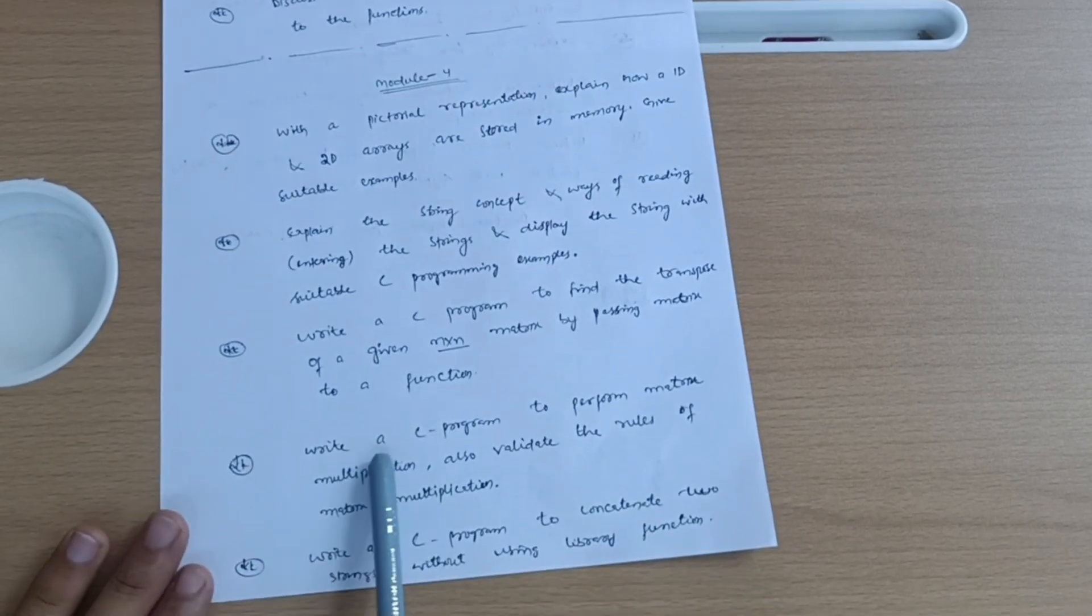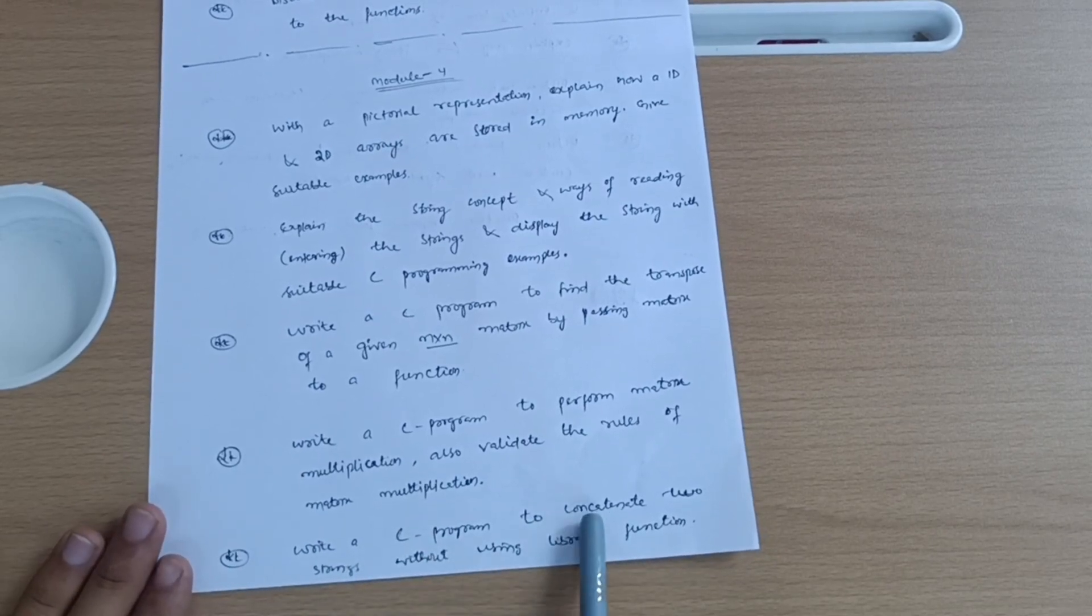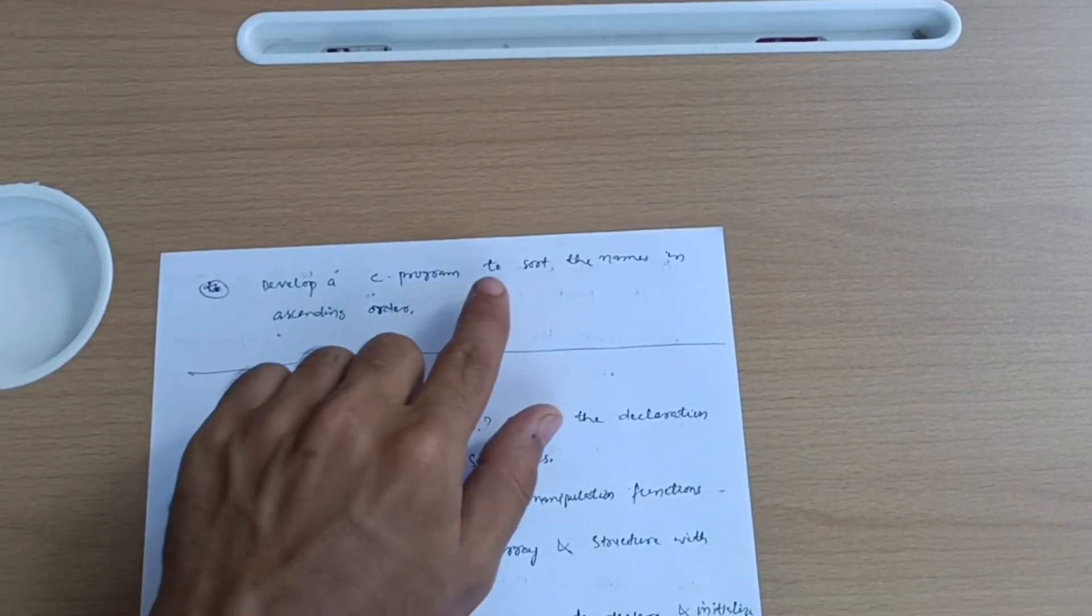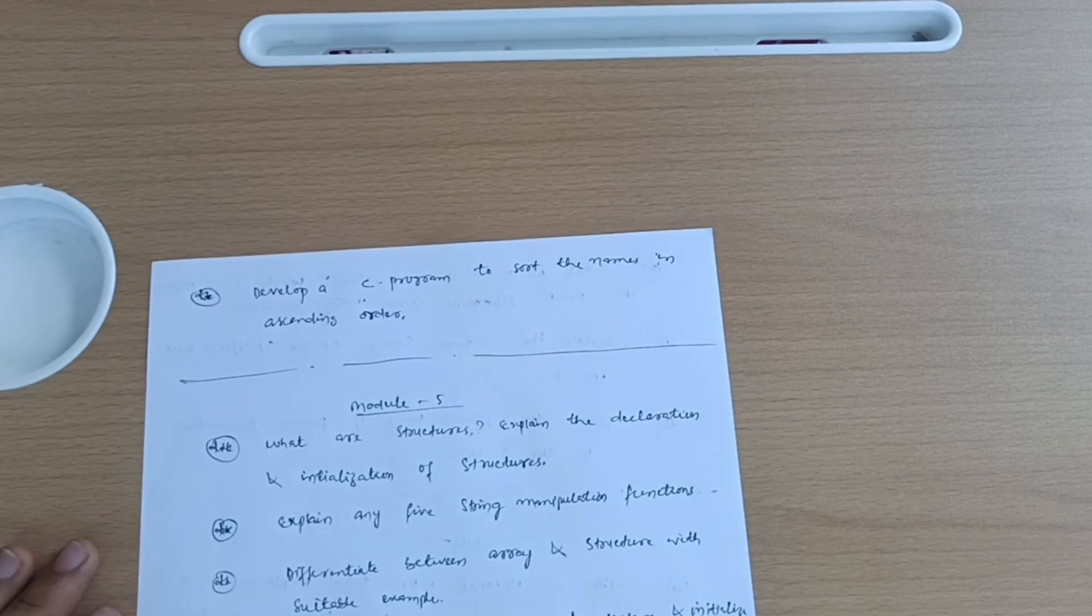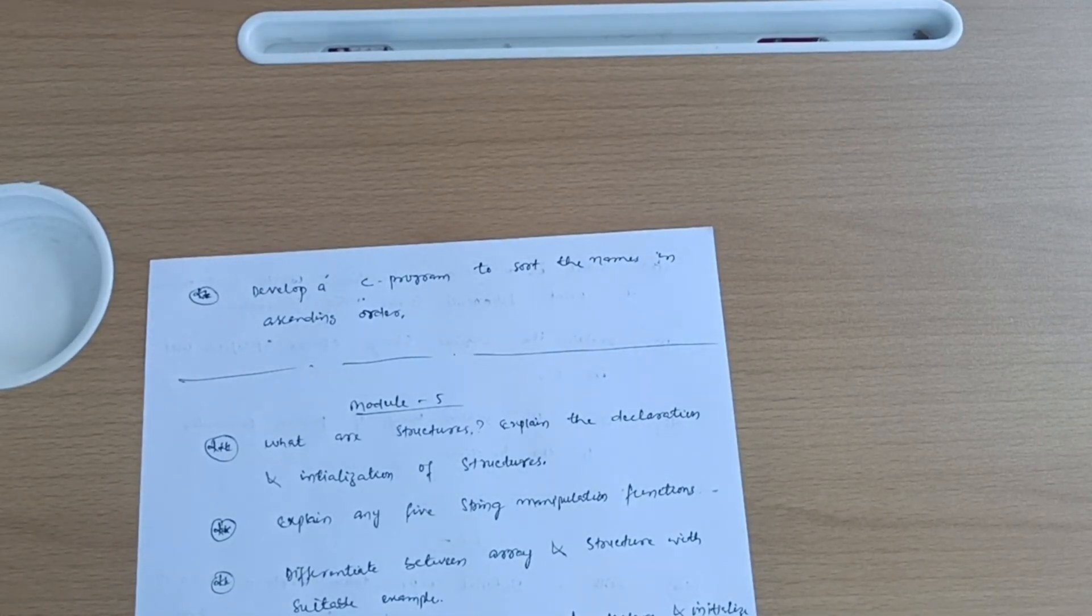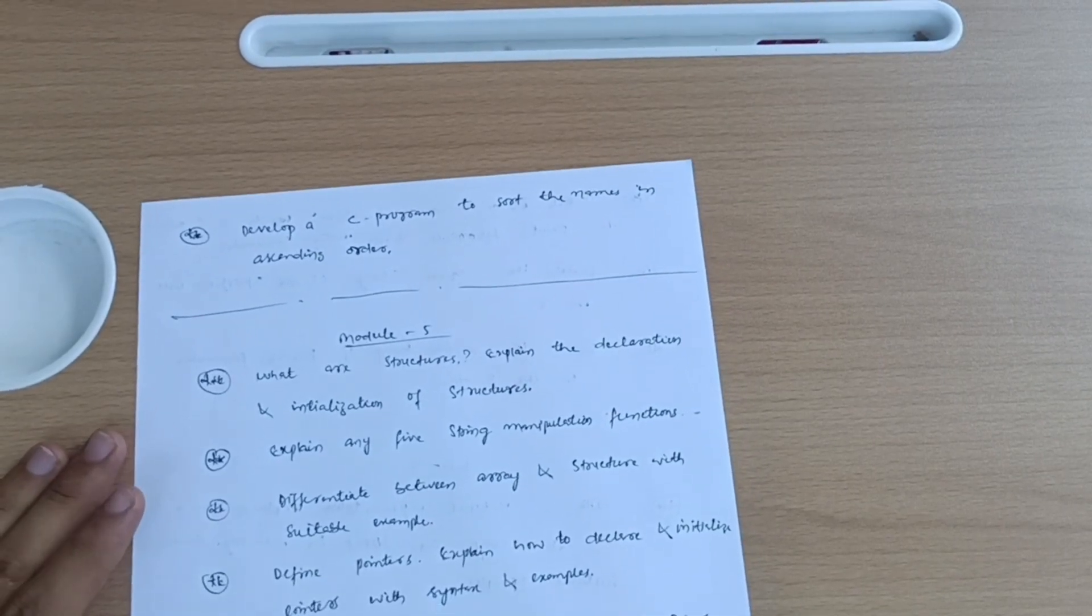Write a C program to find the transpose of a given n cross n matrix by passing matrix to a function. Write a C program to perform matrix multiplication. Also validate the rules of matrix multiplication. And write a C program to concatenate two strings without using library function. Another program is develop a C program to sort the names in ascending order. So this much is enough to cover module 4. You can also refer the DSE question papers for the programs.